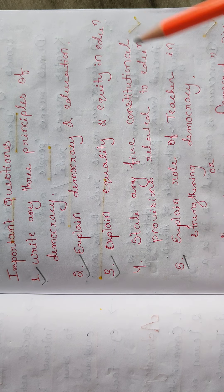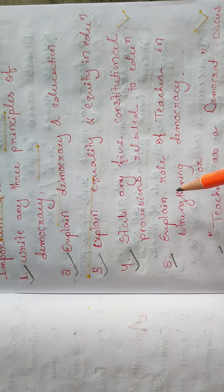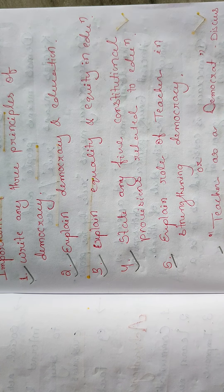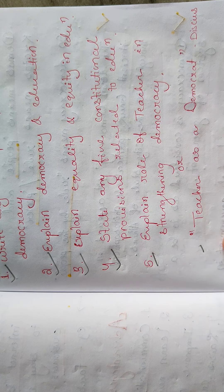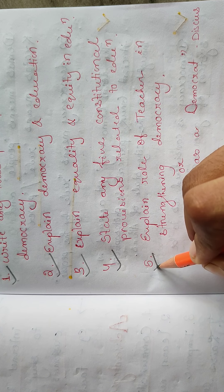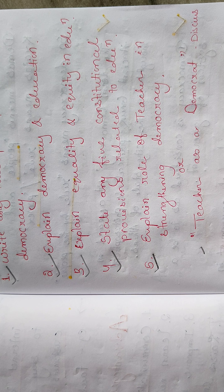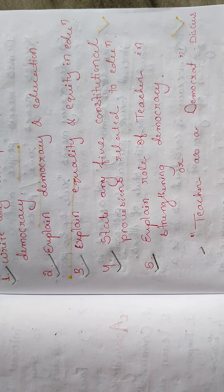We also did 'explain equality and equity in education.' So today we'll try to do Question Number 4: 'State any five constitutional provisions related to education,' and Question Number 5: 'Explain the role of teacher in strengthening democracy, or teacher as a democrat.' We'll try to complete both questions in this video. Please like, share, and subscribe to get more videos — all videos are available in the playlist.